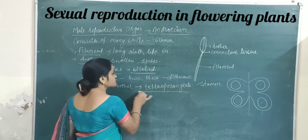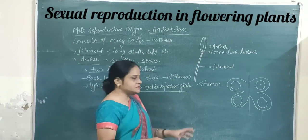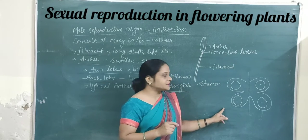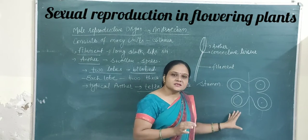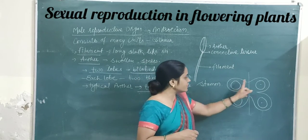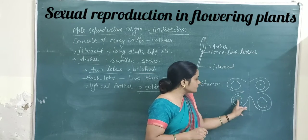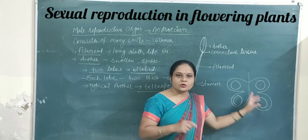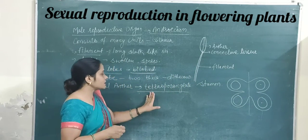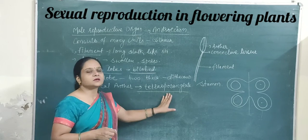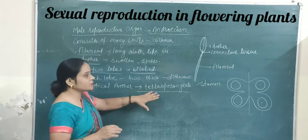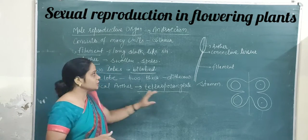Tetrasporangiate means that in the complete anther, four sporangia are present — 1, 2, 3, and 4. So this typical anther structure has the tetrasporangiate condition. This is about the anther lobe.